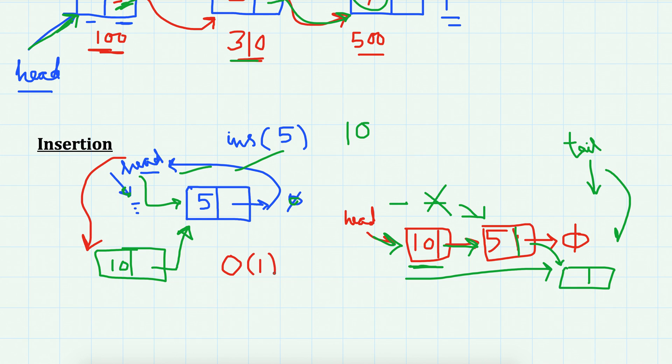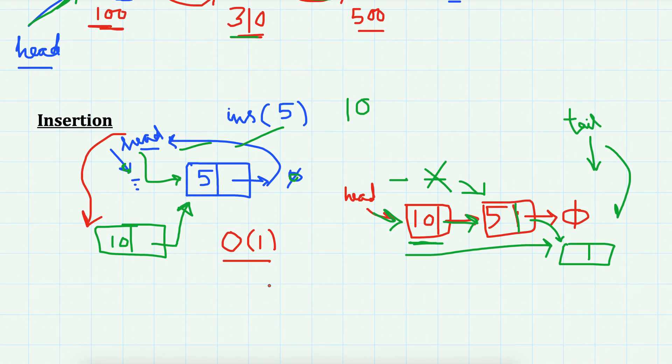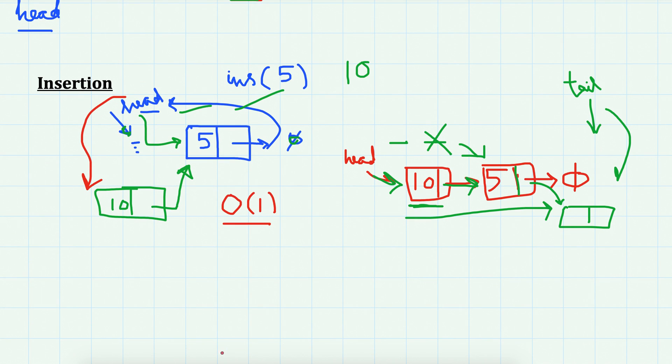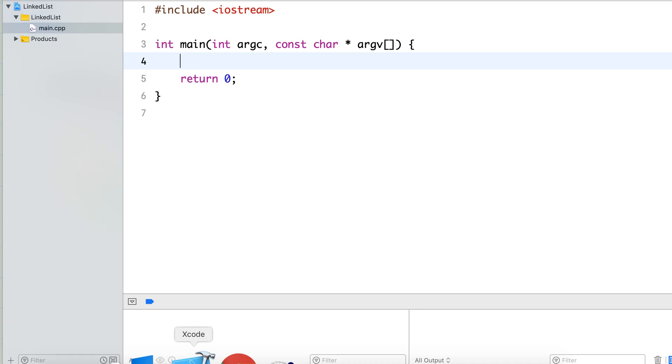By default we will assume that we are inserting at the beginning. These operations are O(1) because they take constant time — we create a node and assign a few pointers, so it's an O(1) operation.